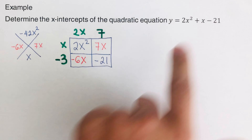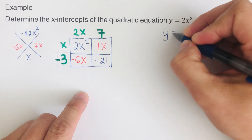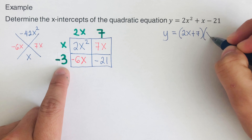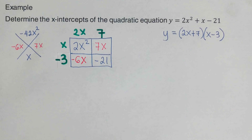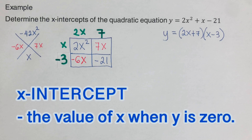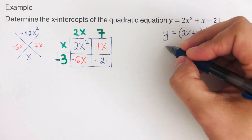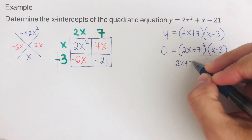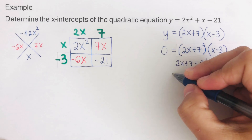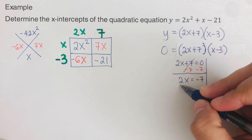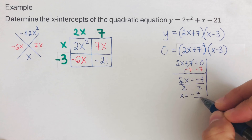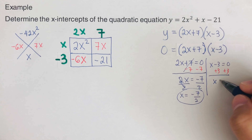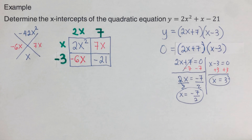From the box, we can rewrite the equation in factored form: y equals (2x plus 7)(x minus 3). Since x-intercepts are the values of x when y equals zero, we set this equal to zero and solve using the zero product property.